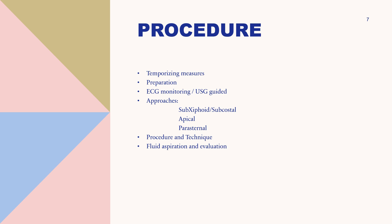Depending on the approach, the transducer positioning changes. In the sub-xiphoid approach, place the transducer just inferior to the xiphoid process in the midline with the indicator facing the patient's right side. Press the hand over the transducer down into the epigastric area and aim it towards the left side of the chest until the heart comes into view. Adjust the depth to view all four chambers and the pericardium. In the parasternal approach, place the transducer to the left of the patient's sternum at the fourth to fifth intercostal space with the indicator pointing towards the patient's right shoulder. If hemodynamic status allows, placing the patient in the left lateral decubitus position improves the view by moving the heart closer to the anterior chest wall and displacing the air-filled lungs.